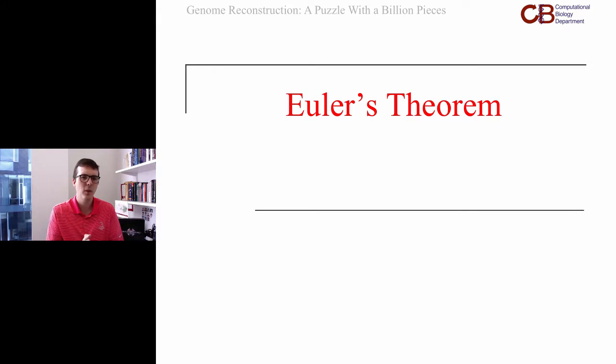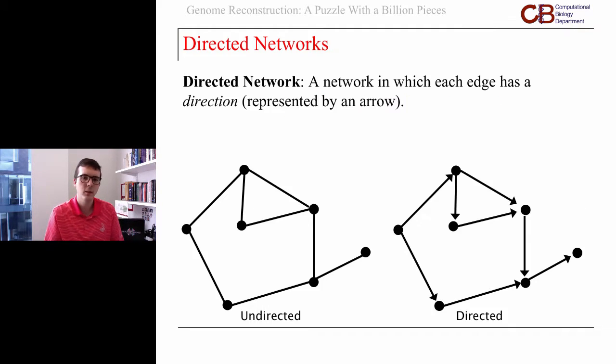What we're going to work with are directed networks when we come back and apply this to biology and the problem of genome assembly. A directed network is a network in which each edge has a direction, so we represent the edges as arrows.